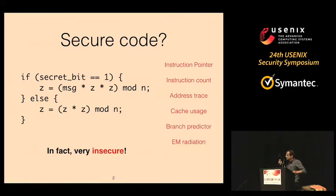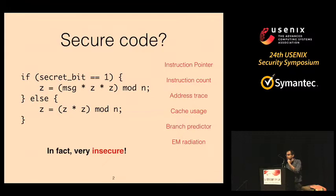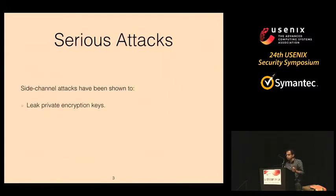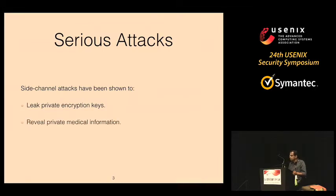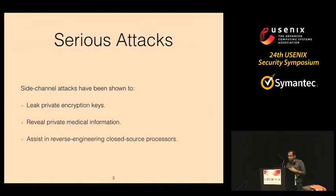The point is that there are a ton of these side channels, and it is extremely difficult to design a physical system that does not leak any side channels at all. Each of these side channels are extremely important — they have been shown to cause very damaging effects, like leaking your private encryption keys. Once encryption keys are lost, the entire security infrastructure comes down. They've also been shown to leak private medical information, fingerprint software libraries, and assist in reverse engineering of closed-source processors.